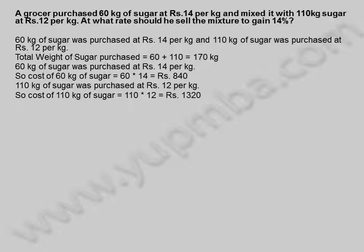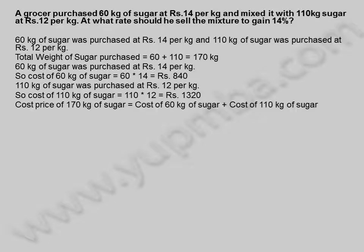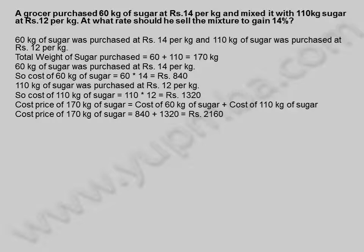Cost of 60 kilograms of sugar is equal to 60 into 14, which equals 840 rupees. 110 kilograms of sugar was purchased at 12 rupees per kilogram, so cost of 110 kilograms of sugar is equal to 110 into 12, which equals 1,320 rupees. Cost price of 170 kilograms of sugar is equal to cost of 60 kilograms plus cost of 110 kilograms, which equals 840 plus 1,320, which equals 2,160 rupees.